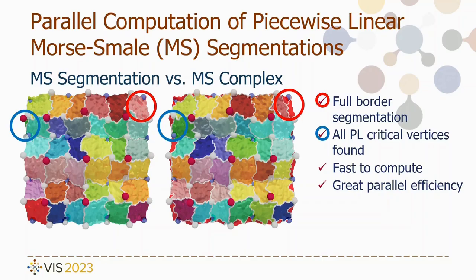Today we want to showcase the Morse-Smale Segmentation and its benefits over the Morse-Smale Complex. The Morse-Smale Segmentation allows you to get the full border segmentation by finding all piecewise linear critical points. It is fast to compute, outbuilding other Morse-Smale Complex implementations by over an order of magnitude due to the algorithms chosen that strongly scale with more cores.